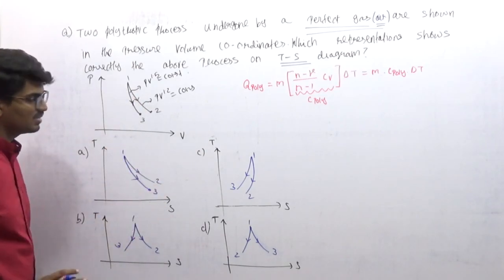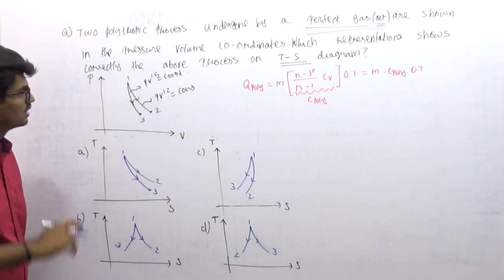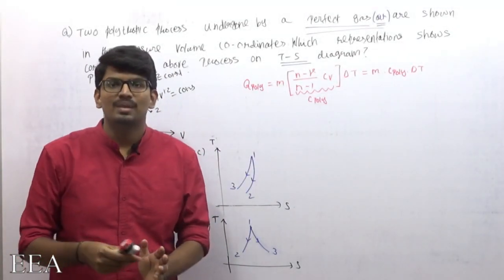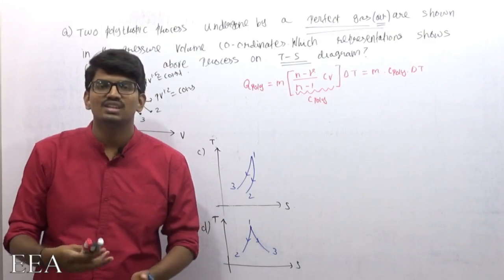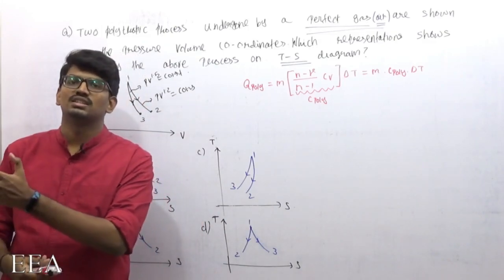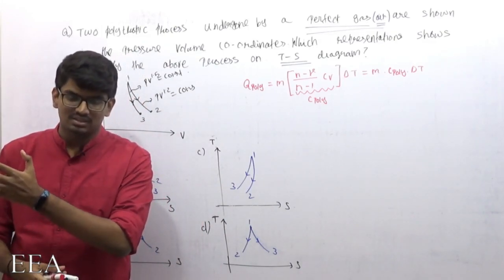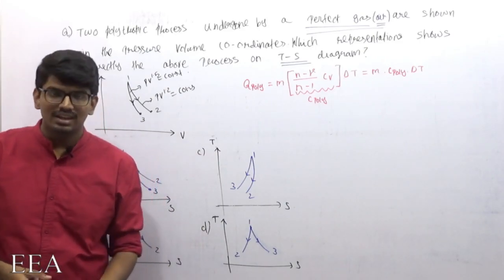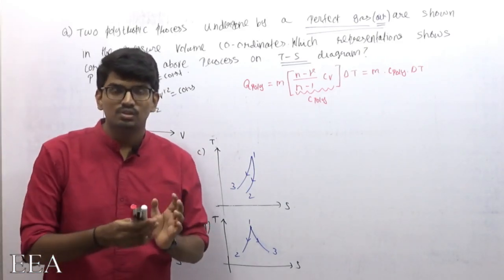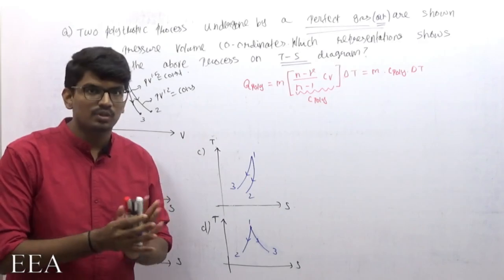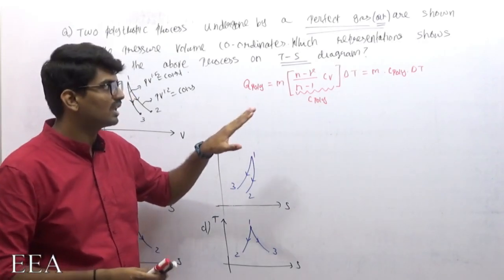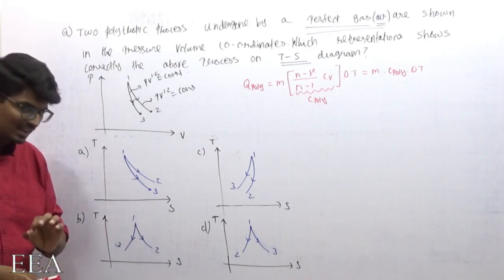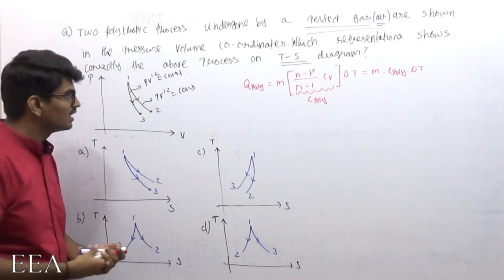They have given some options A, B, C, D. We already discussed this equation when discussing polytropic heat transfer in our third chapter — heat transfer, work transfer, and the first law of thermodynamics. I am going to use this formula for converting the PV diagram to a TS diagram. It's very simple.